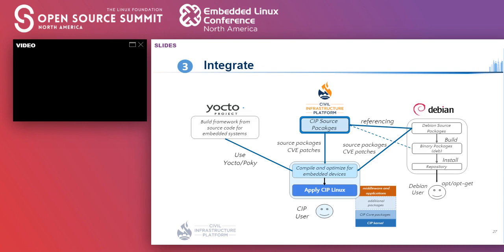The third action is integrate. Precisely speaking, this action is not done by the kernel team but by CIP kernel users. CIP refers to source packages or binary packages in Debian. If you would like to use Debian source packages, you can use Yocto Poky as a build system. CIP core packages contain tens of packages, which may not be sufficient for end product development. Users can add necessary packages from Debian by writing recipes. Debian provides LTS teams and even extended LTS, so super long-term support including user-added packages can be based on these teams.